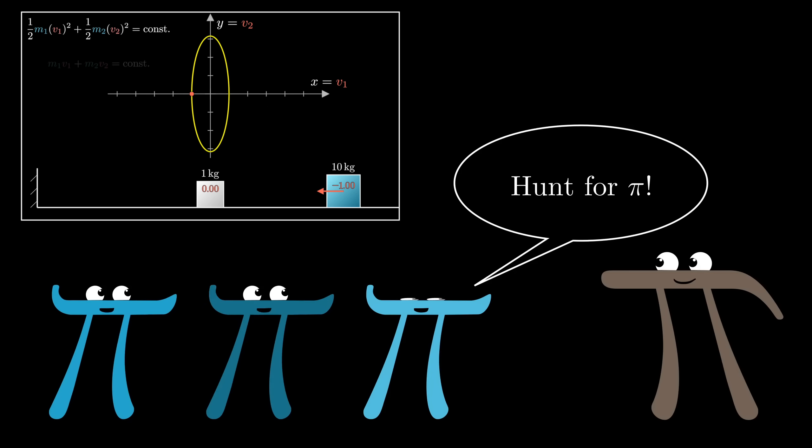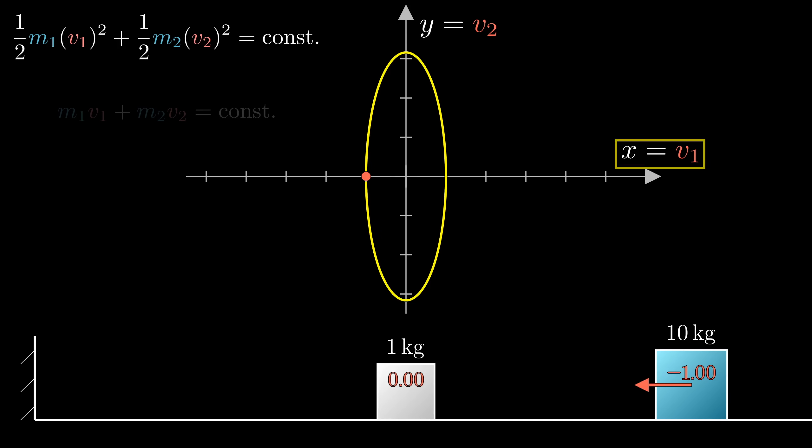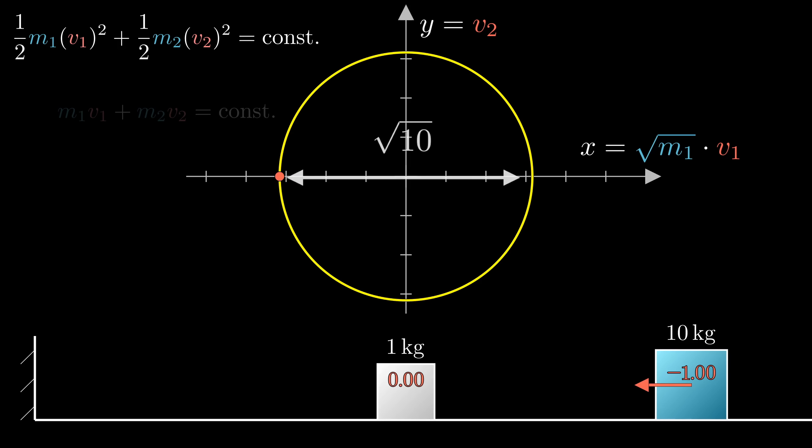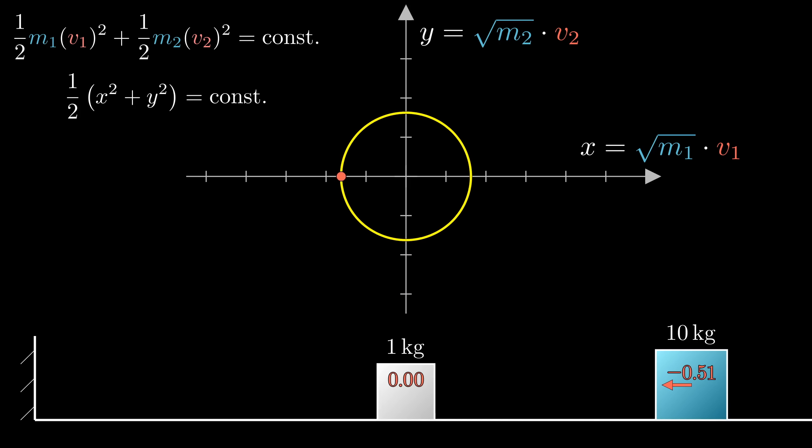Instead of having the x coordinate represent v1, let it be the square root of m1 times v1, which for this example shown stretches the figure in the x direction by the square root of 10. Likewise, have the y coordinate represent square root of m2 times v2. That way, when you look at the conservation of energy equation, what it's saying is 1/2 x squared plus y squared equals some constant, which is the equation for a circle. Which specific circle depends on the total energy, but that actually doesn't matter for our problem.